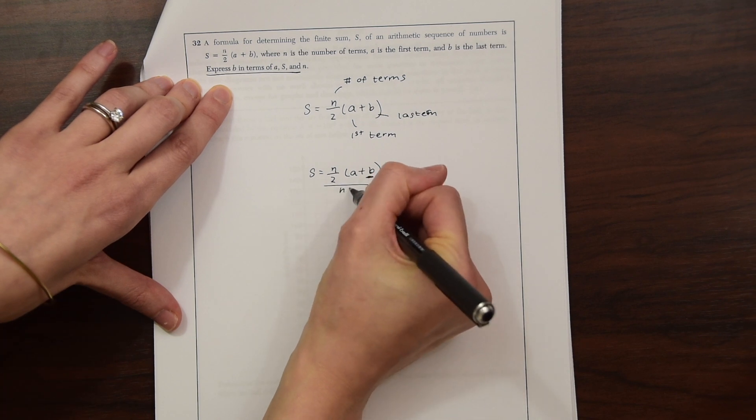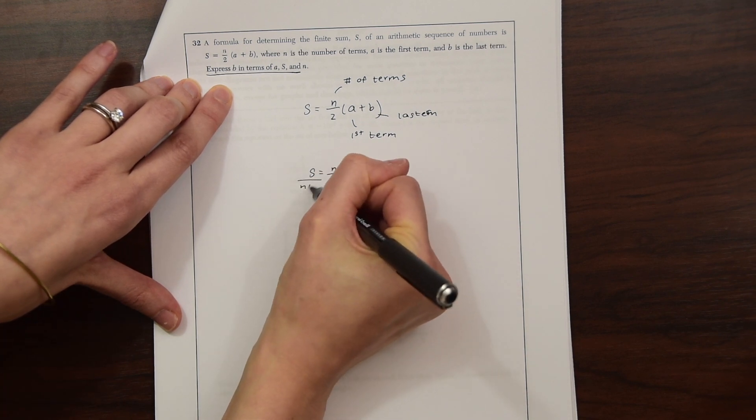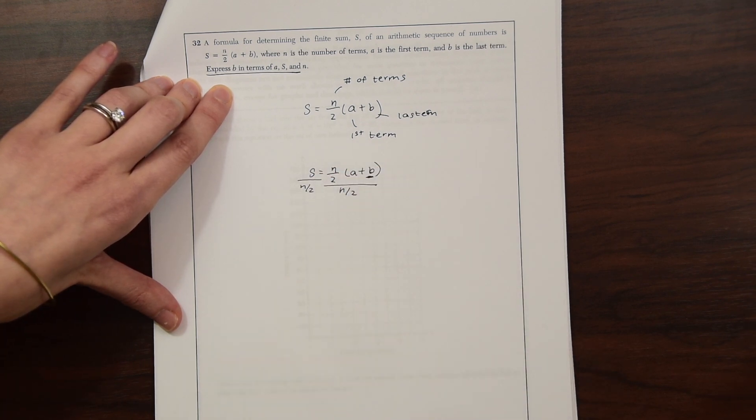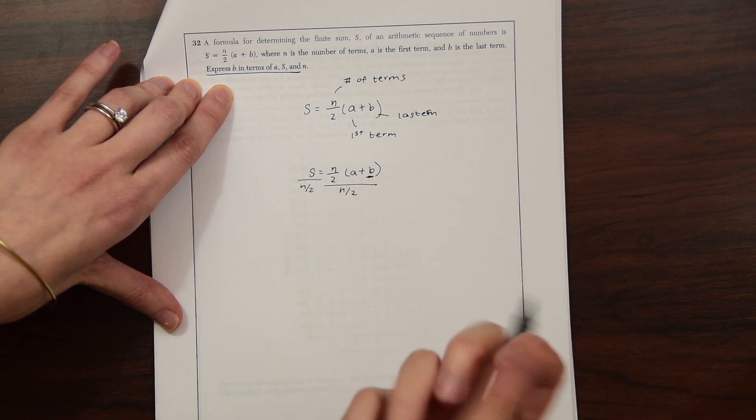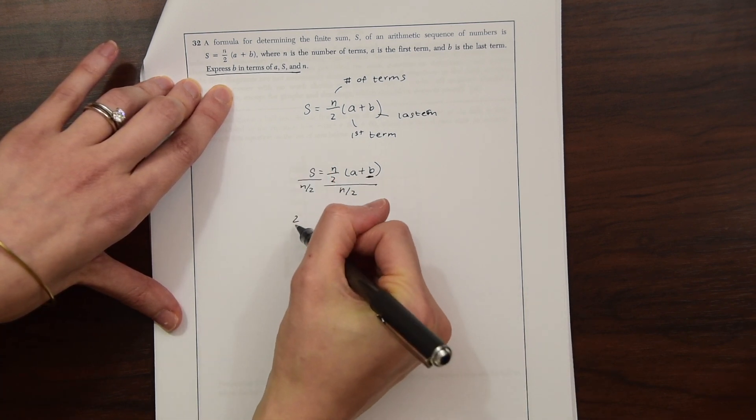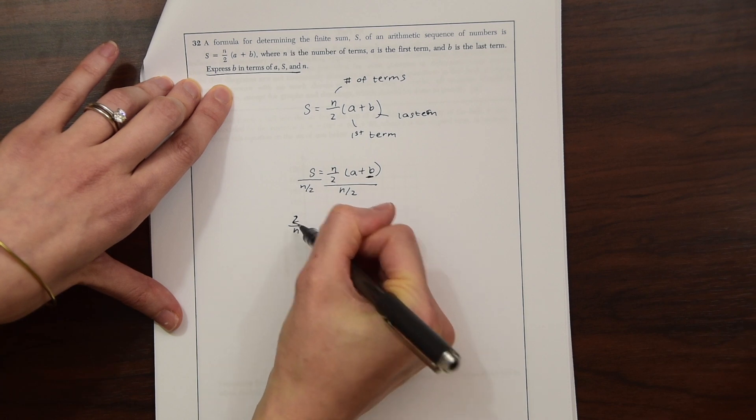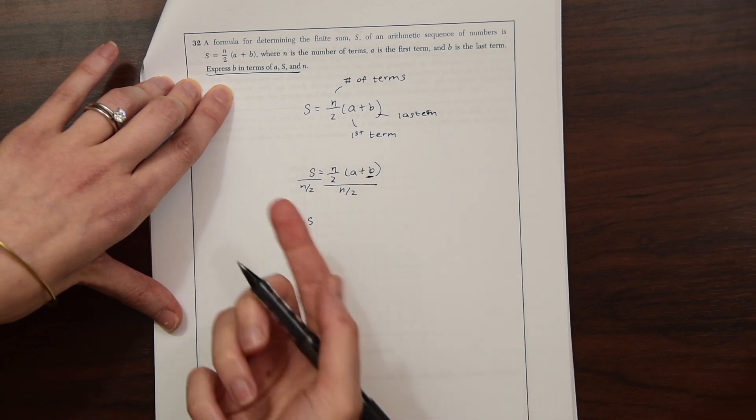So to get b alone, the first thing I'm going to want to do is divide out this n over 2. So we're going to divide this whole thing by n over 2, but on both sides. And what that does is we end up flipping, taking the reciprocal of the fraction. So this really becomes 2 over n times s, or 2s over n.